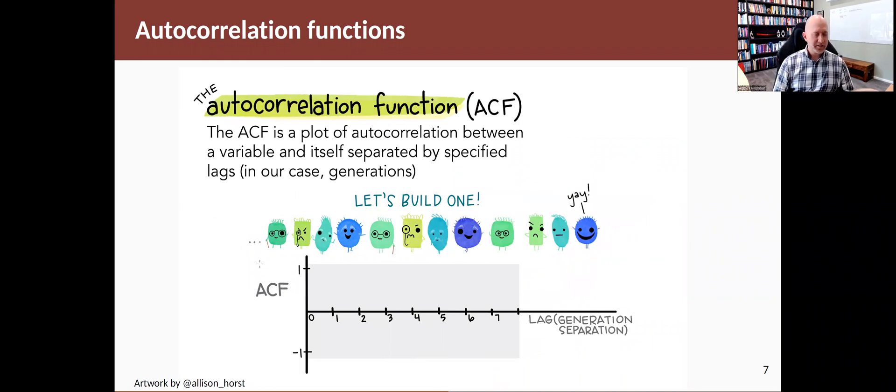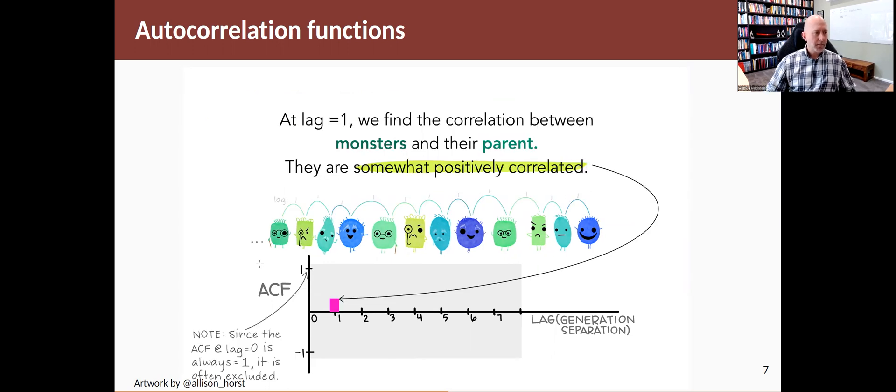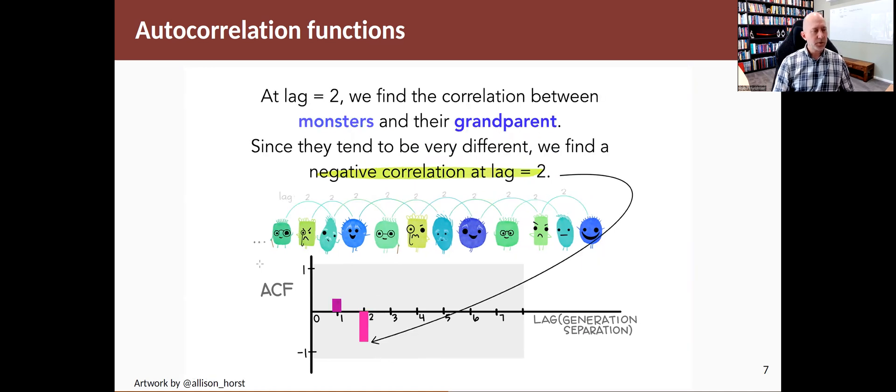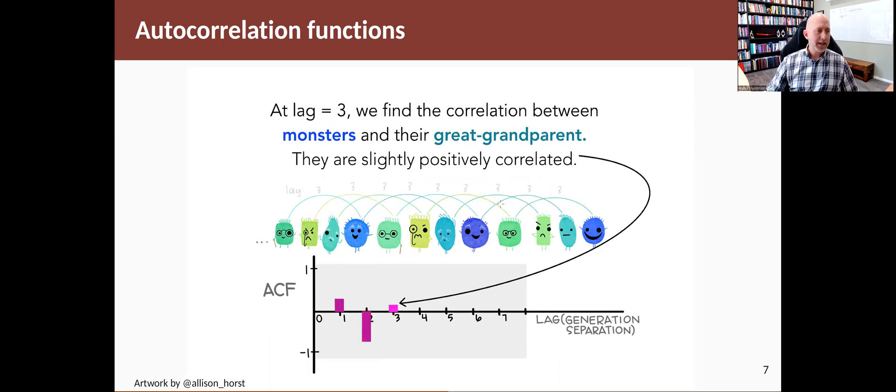The autocorrelation function is simply showing you this information. So at lag one, you look at the correlation between each of the monsters and their parents, and they're somewhat similar. They're not totally different from each other, but the similarities are not as strong as for other generations. At lag two, you're looking at the relationship between each monster and its grandparents. So this guy and his grandparent, and this guy and his grandparent, and so on. All of the different pairs that are someone and their grandparent. And they tend to be quite different from each other, so you get a negative correlation. At lag three, you're looking at the relationship between someone and their great-grandparent. So they're three generations apart, someone and their great-grandparent.